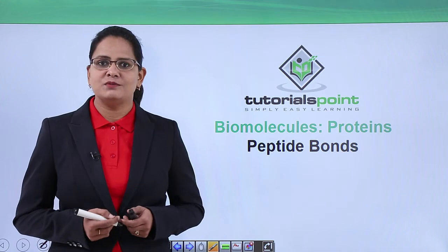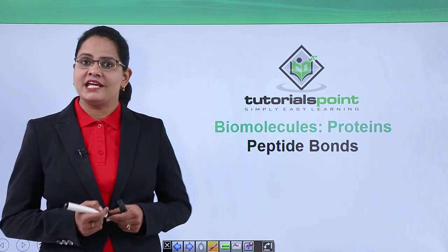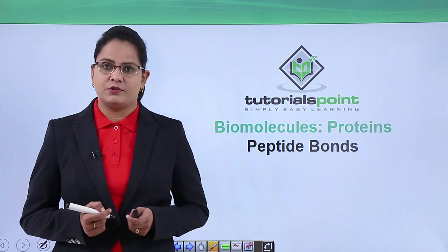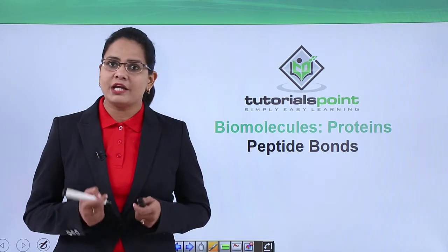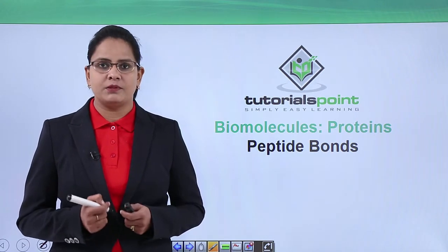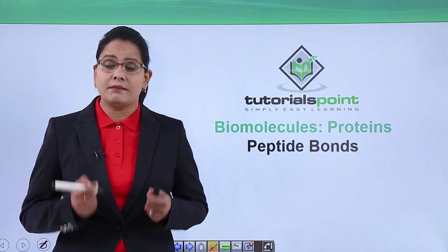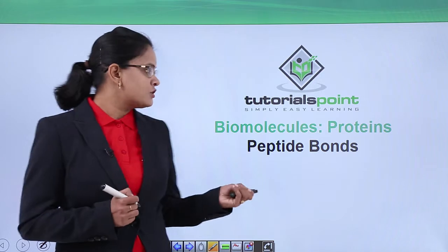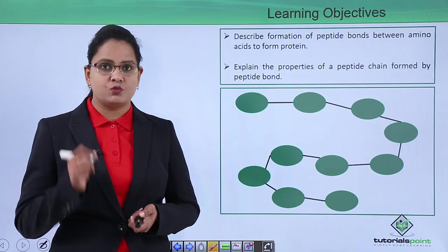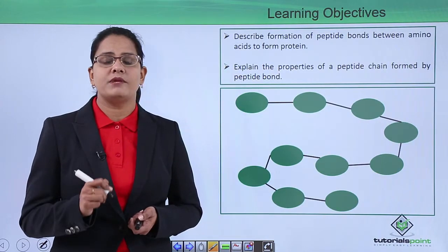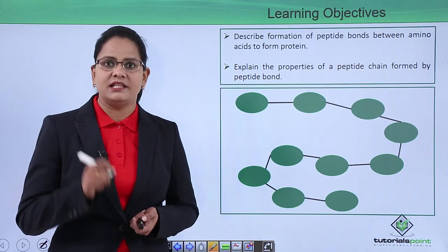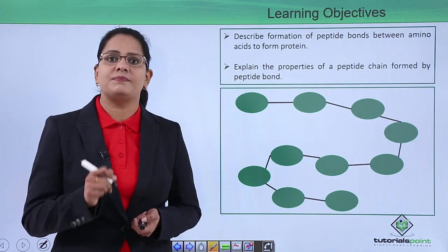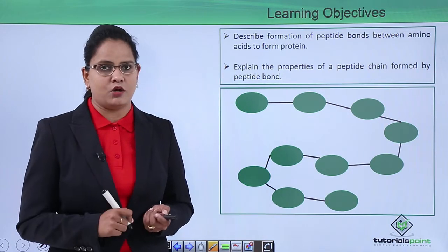Hello everyone, welcome to Tutorials Point. In this video we will learn about the bond which forms the protein. We know that amino acids are the monomers that form the protein. The learning objectives will be to describe the formation of the peptide bond using amino acids, and to explain the properties of the peptide chain formed using the peptide bond.